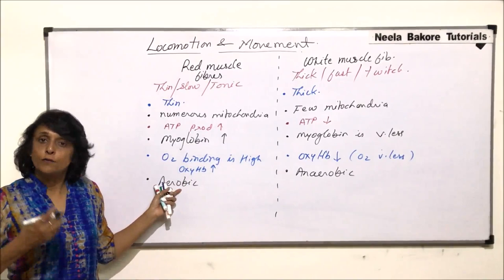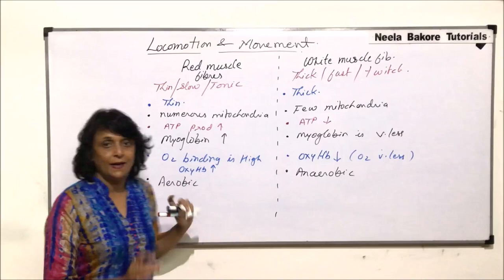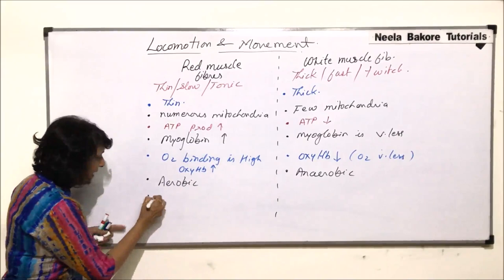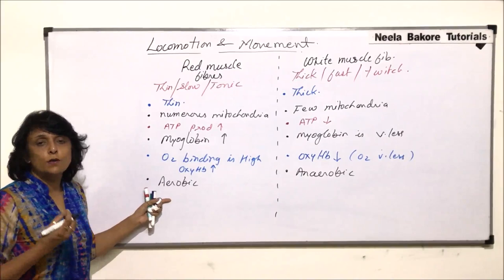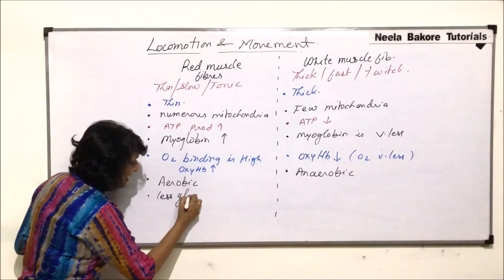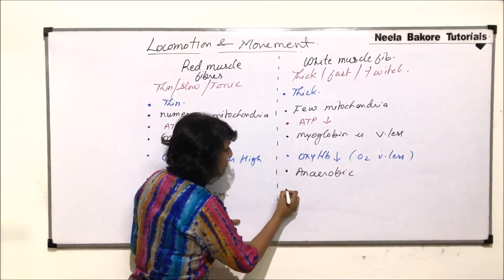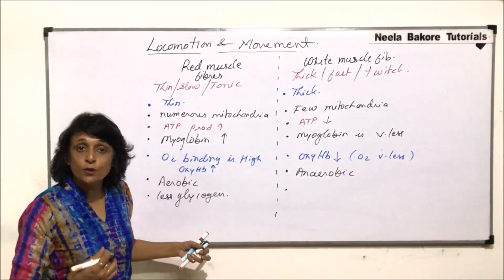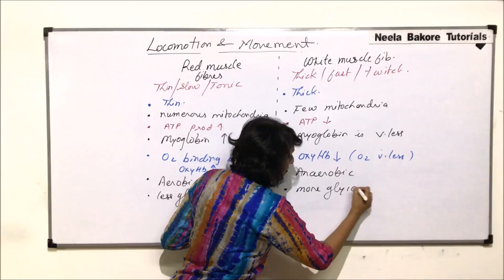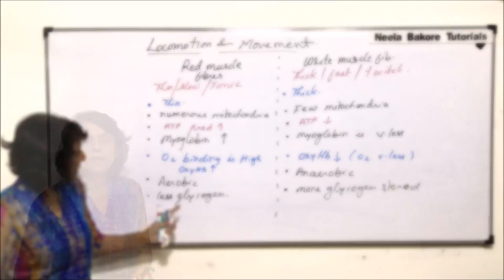In red muscle fibers, aerobic breakdown of glucose takes place, while in white muscle fibers anaerobic breakdown of glucose takes place. This glucose comes from glycogen. In red muscle fibers, because oxygen is continuously available and stored, anaerobic breakdown is not required — so they have less glycogen stored. White muscle fibers totally depend on anaerobic respiration, so glycogen must be continuously broken down anaerobically, meaning there is more glycogen stored in them.